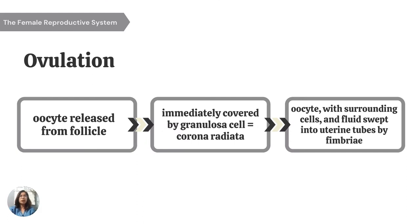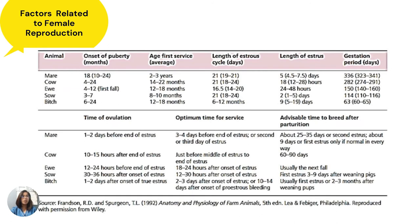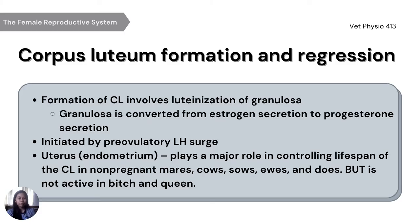Ovulation occurs at the ovary surface and is described as the process in which an oocyte or the female germ cell is released from the follicle. Ovulation is stimulated by the release of luteinizing hormone from the pituitary gland. In the process of ovulation, the oocyte is released from the follicle and immediately covered by granulosa cells — the corona radiata — and the oocyte with surrounding cells and fluid is swept into the uterine tubes by the fimbriae. Ovulation is spontaneous in all domestic animals except the cat. In reflex ovulators such as the cat, coitus is required for ovulation to occur.